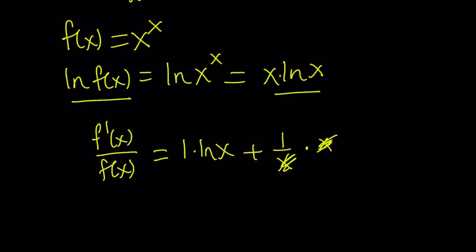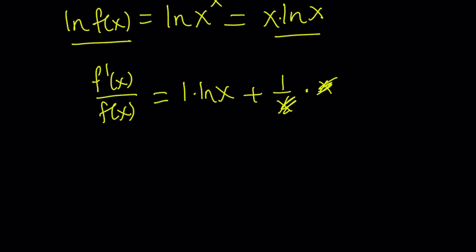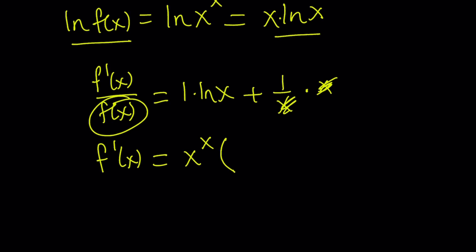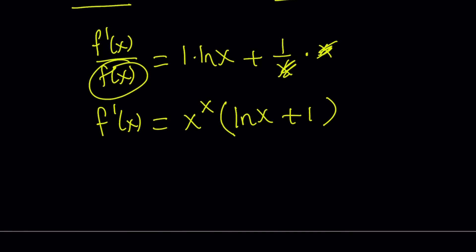These two cancel out leaving us with 1. And since f of x is x to the power x, if you cross-multiply you get f prime of x equals x to the power x times the quantity ln x plus 1. There are also some formulas and shortcuts for these kinds of things, but just ln both sides and differentiate.